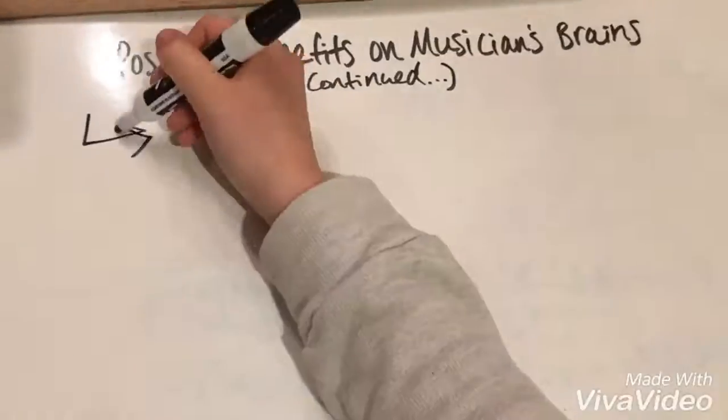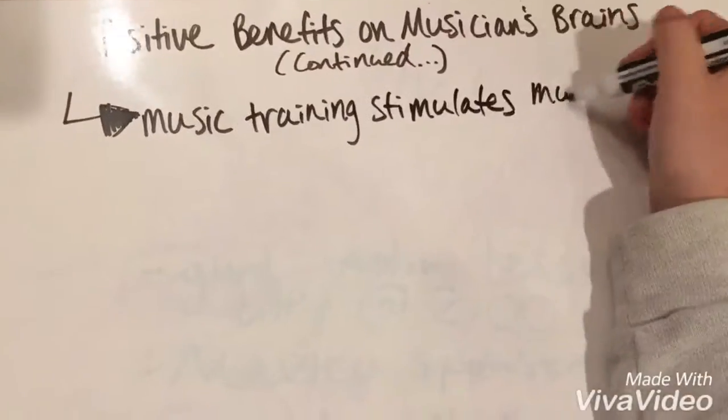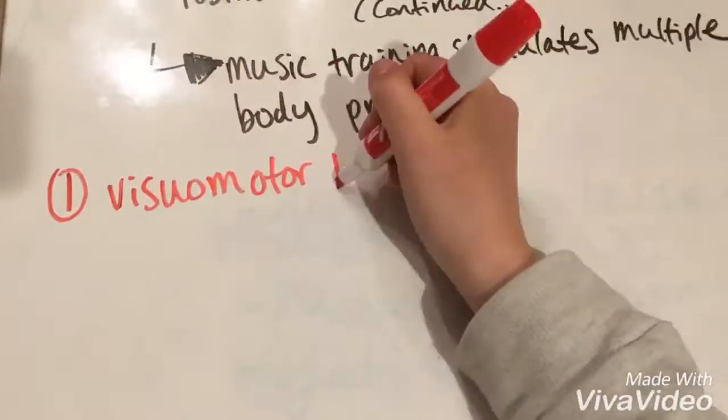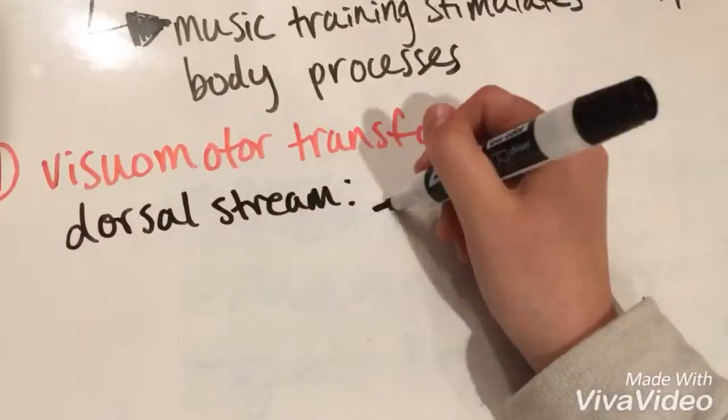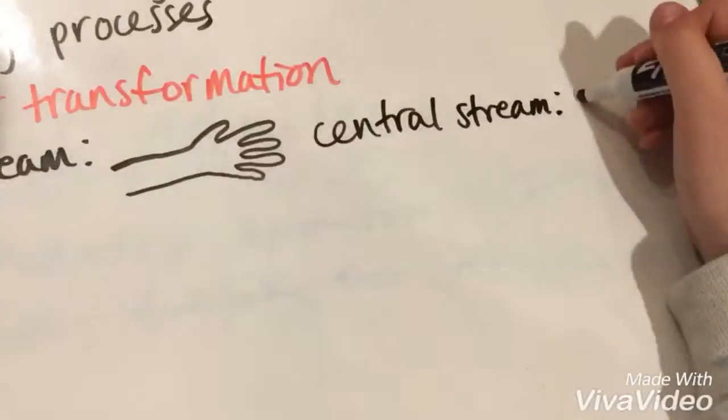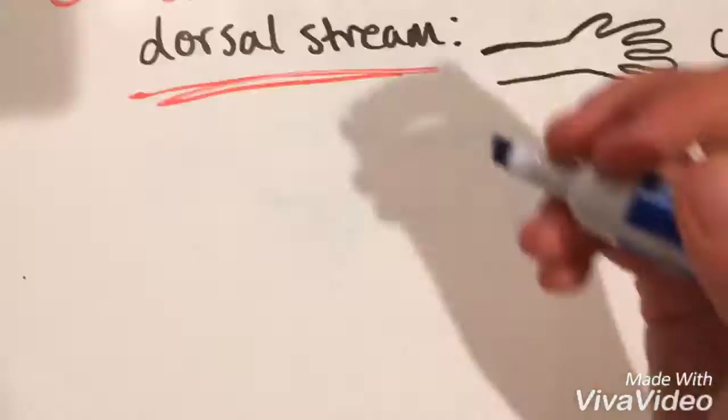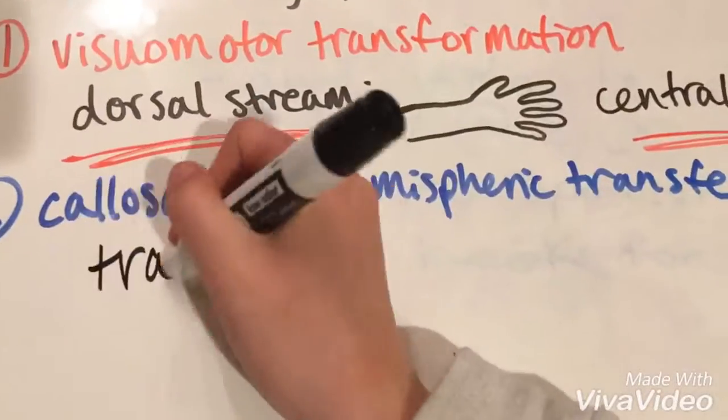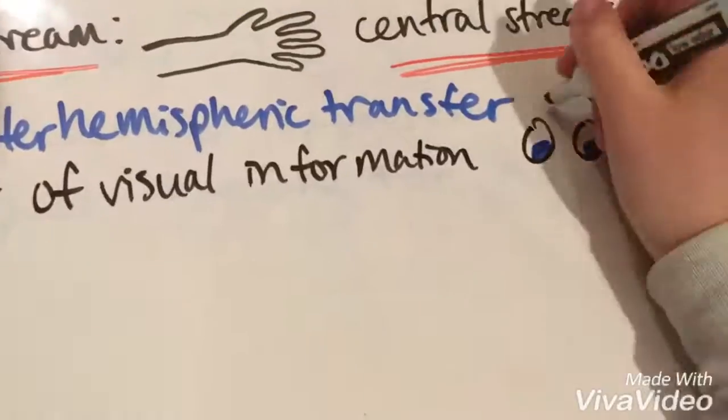The second part of positive benefits on musicians' brains will focus on how music training stimulates many body processes. This includes visuomotor transformation, which involves the dorsal stream and ventral stream of the brain. The dorsal stream is responsible for reach, and the ventral stream is responsible for grasp.